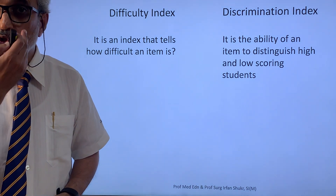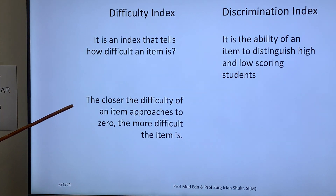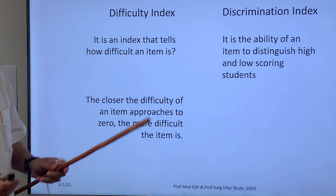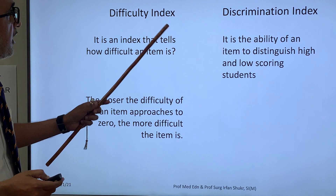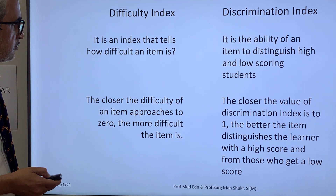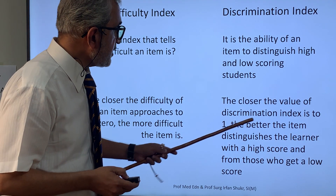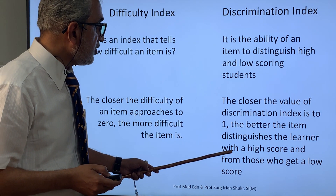The closer the difficulty of an item approaches zero, the more difficult the item is. Its value is between zero and one — both the difficulty index and discrimination index. The closer the value of the discrimination index is to one, the better the item distinguishes the learner with the highest score from those who get a low score.